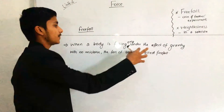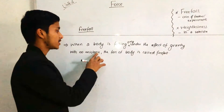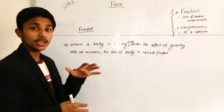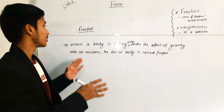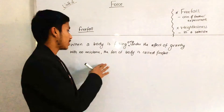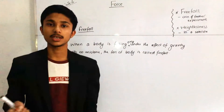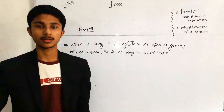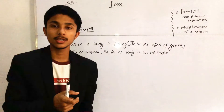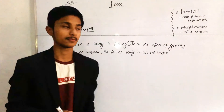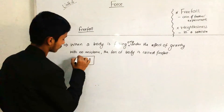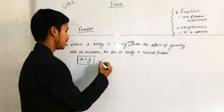When a body is falling only under the effect of gravity with no resistance, the fall of the body is said to be free fall. It means when no resistance is there and the body is falling only under the influence of gravity, such fall is called free fall. The best example of free fall is the falling of an object on the moon or in vacuum. In free fall, the acceleration due to gravity equals the acceleration of the body.